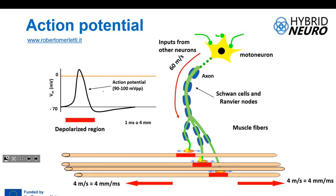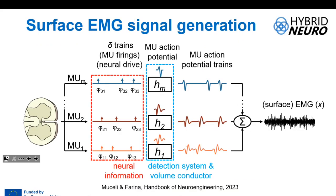The action potential travels from the motor neuron to the fibers via the neuromuscular junction, and then travels towards the two tendons. This is the elemental electrical activity from each motor neuron. When a motor neuron is activated, it usually discharges more than once, so you actually have a train of action potentials. The more force you need, the more motor neurons become active, giving you many trains of action potentials from a muscle activation.